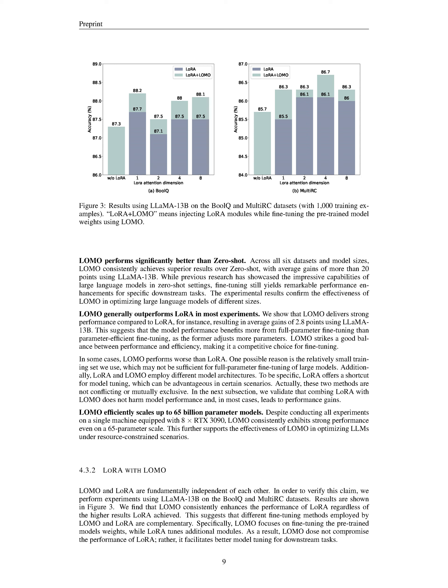More specifically, LOMO targets the fine-tuning of the initial weights of pre-trained models, while LoRA adjusts auxiliary modules. This means that LOMO doesn't detract from LoRA's performance — on the contrary, it aids in refining the model tuning process for subsequent tasks, effectively improving the results. Experiments using LLaMA 13B on BoolQ and MultiRC show that LOMO and LoRA are complementary, with LOMO focusing on fine-tuning pre-trained model weights and LoRA tuning additional modules, facilitating better model tuning for downstream tasks.